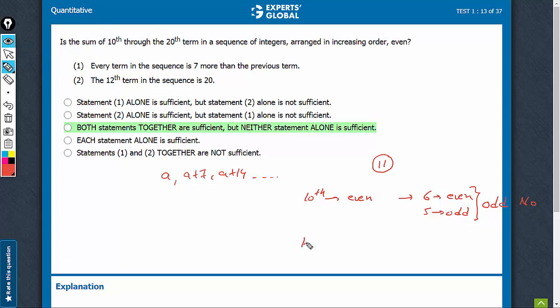However, if the 10th term were odd, now we will have reverse: 6 terms would be odd and 5 terms would be even. And therefore, combining, we can say 6 into odd would be even, 5 into even would be even. And now, therefore, sum would be even and we will get yes as an answer. So yes and no both are possible. Statement 1 is not sufficient.